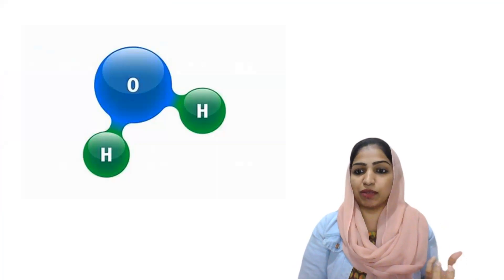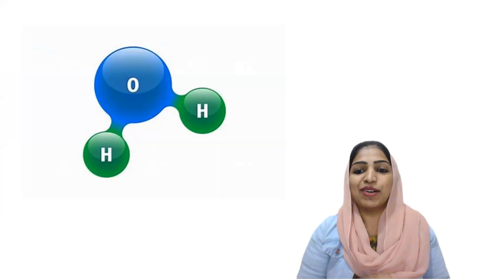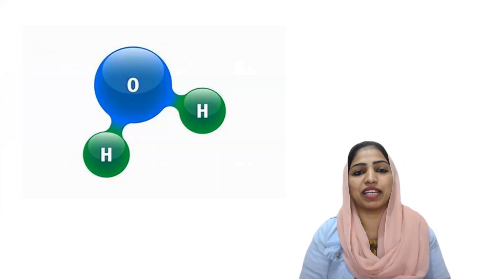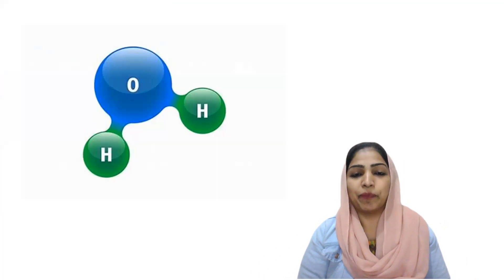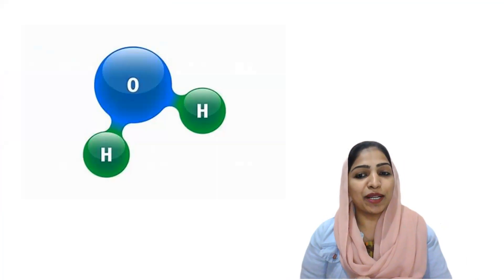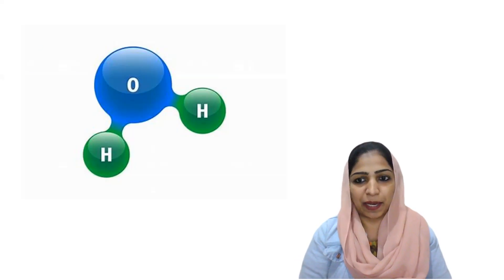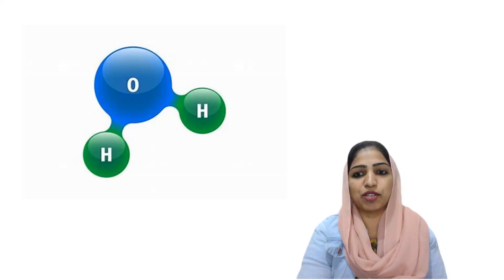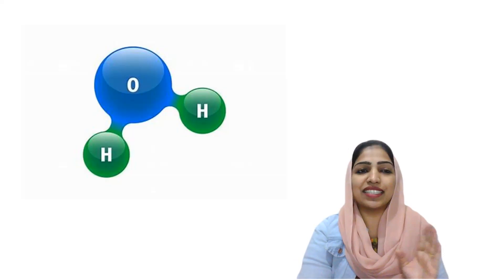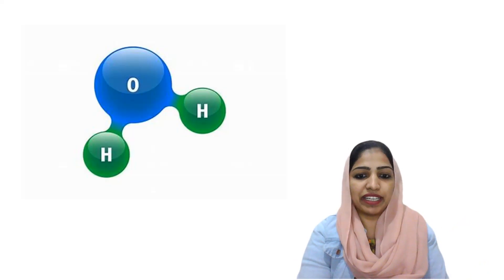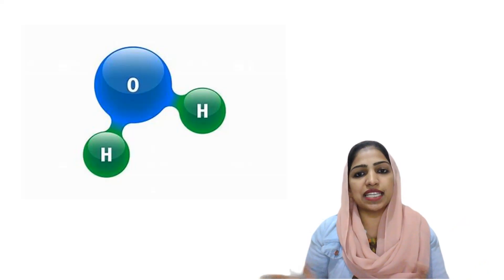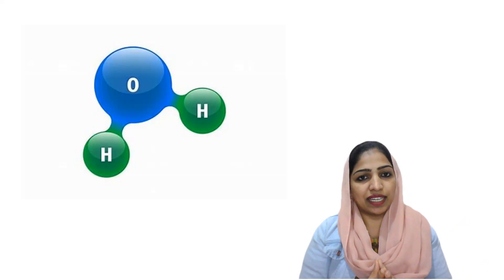Materials are made up of small particles called atoms or molecules. If we say copper, the smallest particle is a copper atom; for water, it is a water molecule. The concept of atoms arose because there are two laws that are experimentally verified, explained by John Dalton.